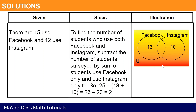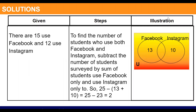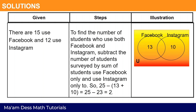To find the number of students who use both Facebook and Instagram, we subtract the total by the sum of Facebook only and Instagram only: 25 minus (13 plus 10) equals 25 minus 23, which equals 2. So 2 students use both Facebook and Instagram. We place 2 in the intersection of the Venn diagram.